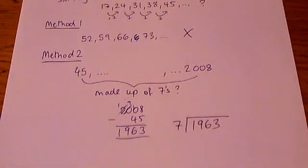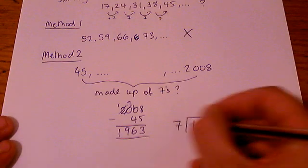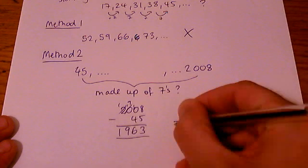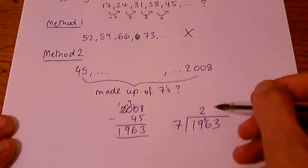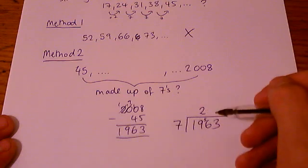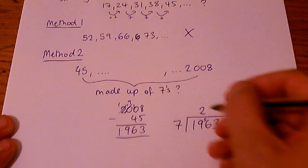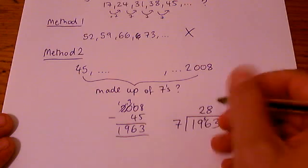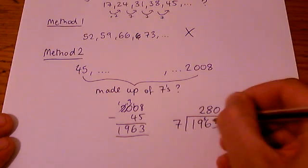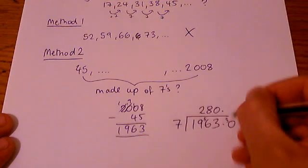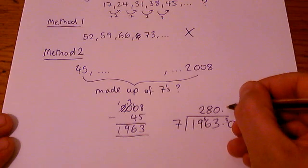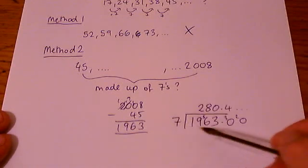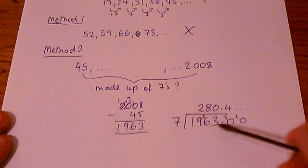And we just do that quickly. You could use a calculator if this was on a non-calculator paper, but you could also use this method. Sevens into 19 goes twice with five left over. Sevens into 56, well, how many is that? Sevens, 42, is that eight? I think that's eight. Eight sevens of 56. And then sevens into three doesn't go. And suddenly we have to go into decimals. So sevens into 30 goes, what's that? Four with two left over.